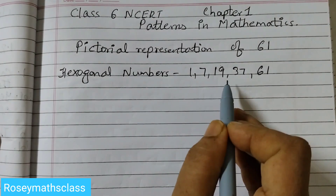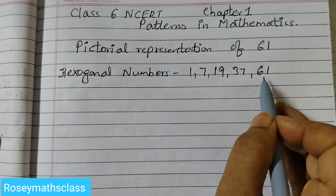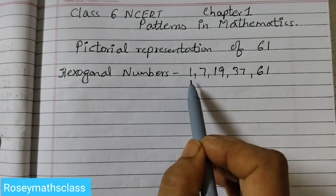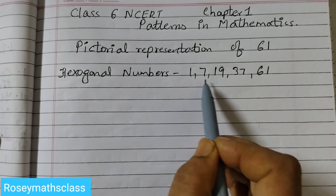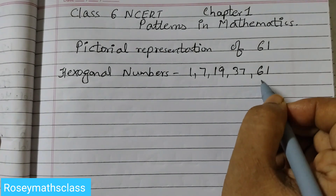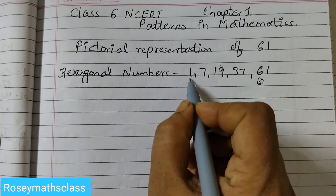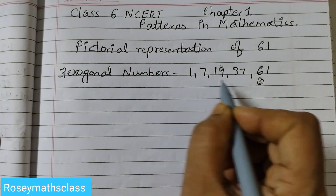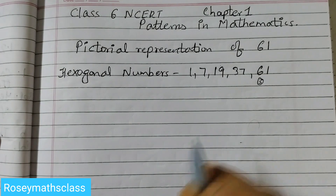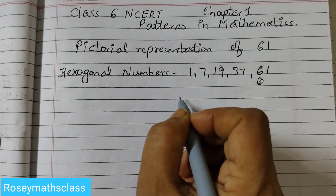All this I have already shown you in my previous video. Today we are going to do just 61. If you count 1, 2, 3, 4, 5 — it is in the fifth position. This is first, second, third, fourth, fifth. So you will start with five dots.